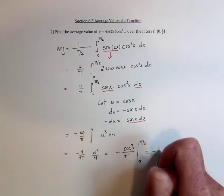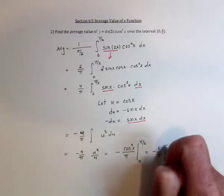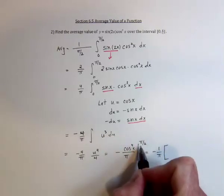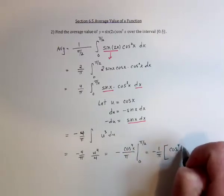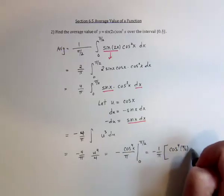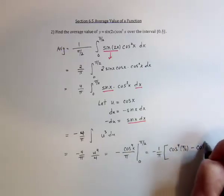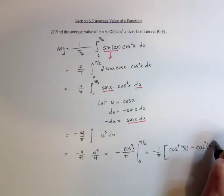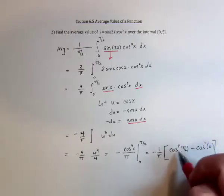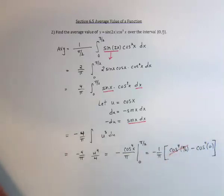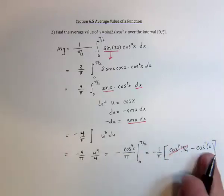So we could even factor out the 1 over pi, and then just evaluate cosine at pi over 2. So cosine of pi over 2 minus cosine at 0. Well, cosine of 0 is 1, and cosine of pi over 2 is 0. So this is gone, and this is just a 1.